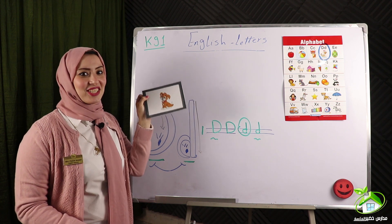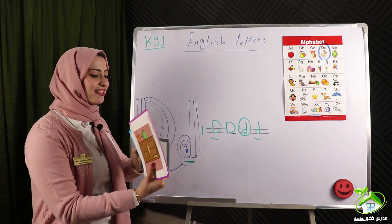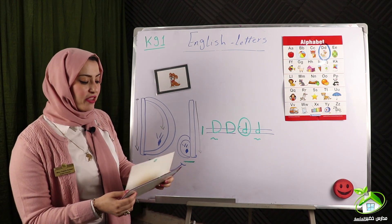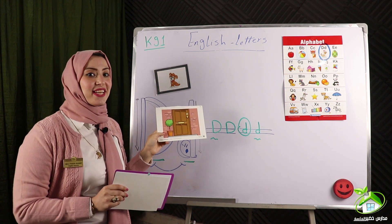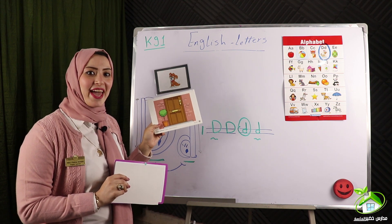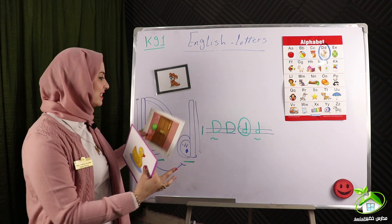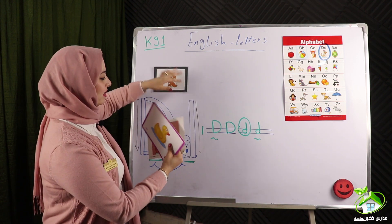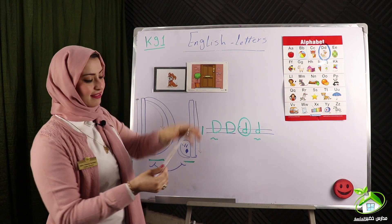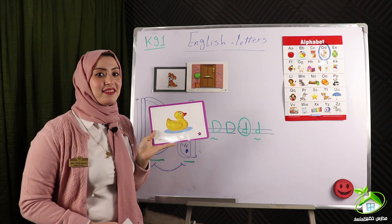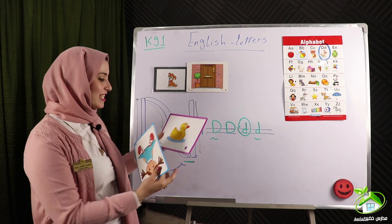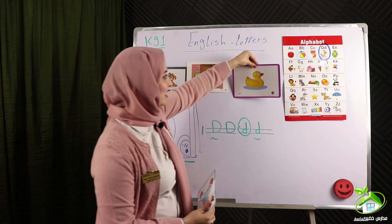Now I will make a small exercise. Can you tell me what is it? Yes — duck, duck. Excellent! D, duck. Another picture — what is it? Do you know? Yes — door. Excellent, door. D, door. Excellent! What is it? Yes — duck, duck. D, duck. The last picture — what is it? Doll. Excellent, doll. D, doll.